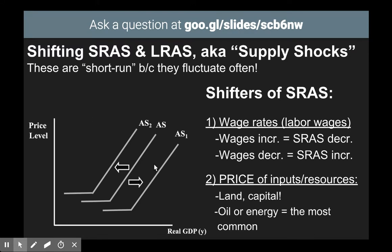The second thing that can shift SERAS — short run, because it fluctuates often — is the price of inputs or resources. Oil or energy, sometimes even land, are the most common examples you might see on a test or the AP test. Prices of oil change all the time. Just like old school supply, if the price of a resource goes down — say it's cheaper to buy oil — then a company can buy oil at a lower price and produce more goods than before. So if the price of an input or resource decreases, SERAS would shift to the right, on this graph from AS to AS1.